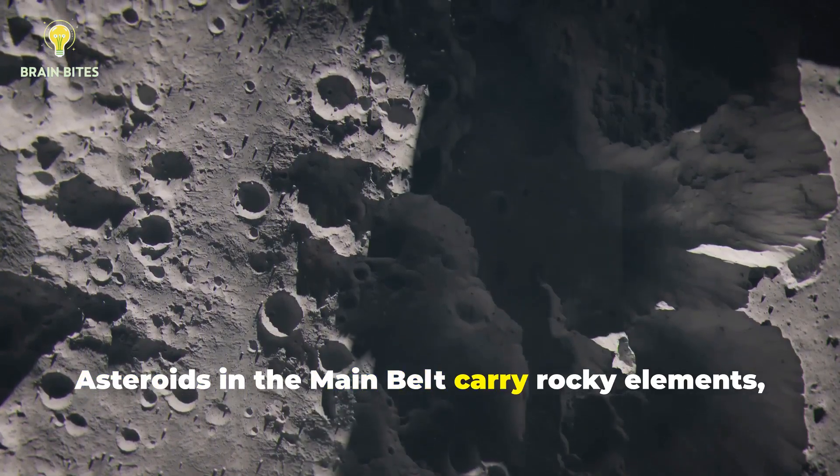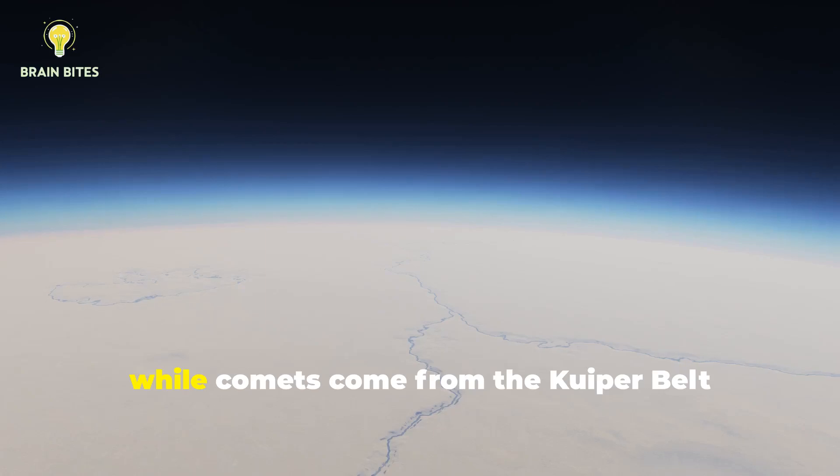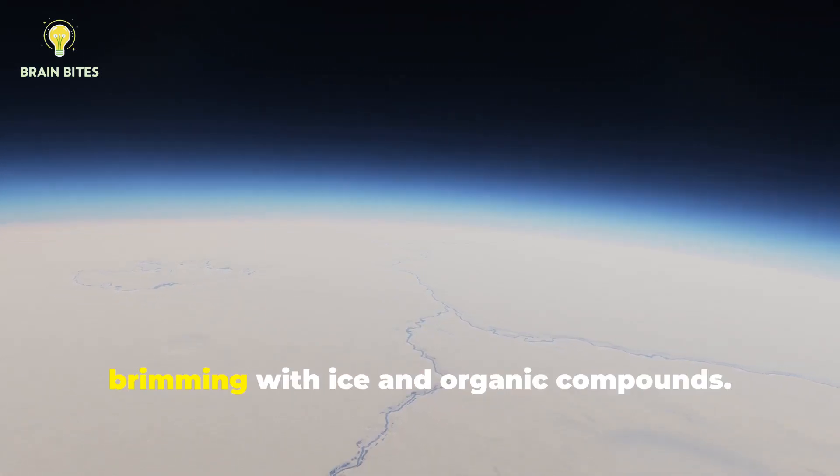Asteroids in the main belt carry rocky elements, while comets come from the Kuiper belt and Oort cloud, brimming with ice and organic compounds.